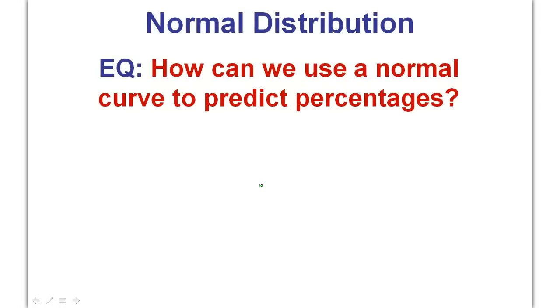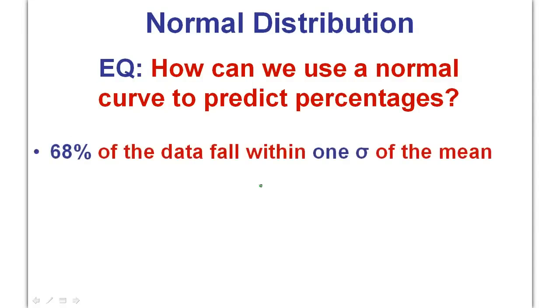All right, that was just background so you'd understand sort of what the point is. Now, the essential question was how can we use a curve like this to make predictions of percentages? And here's basically how. This is so common that the scientists and economists spend a lot of time playing with the numbers and studying them. And they have found certain principles to be true. And we're just going to memorize them, starting with these three numbers.